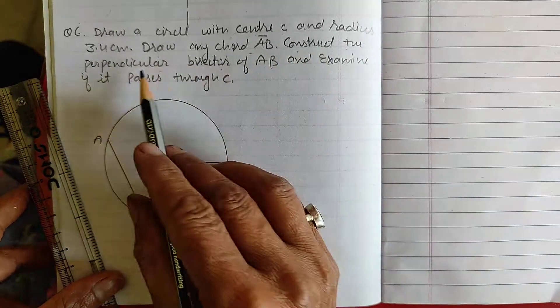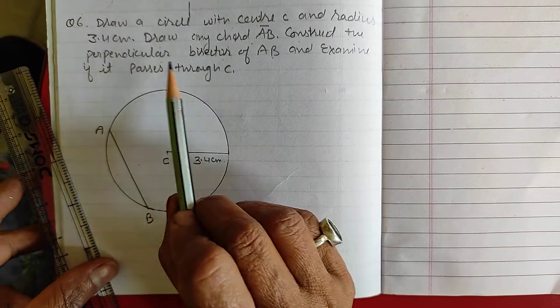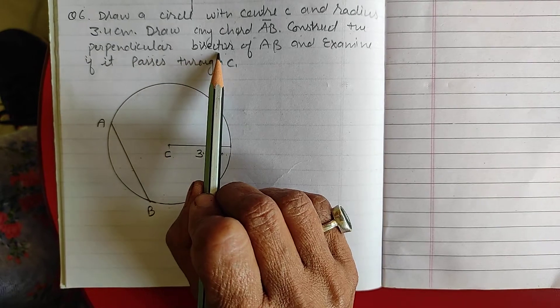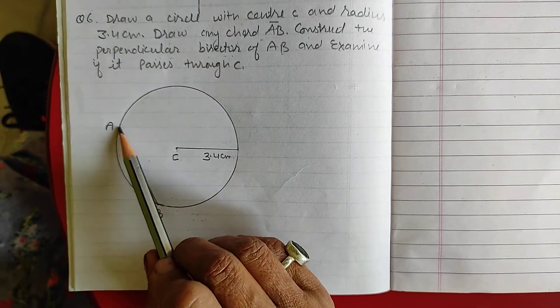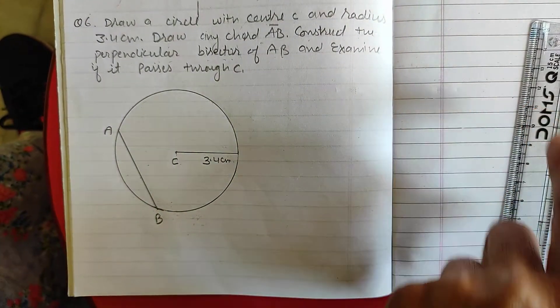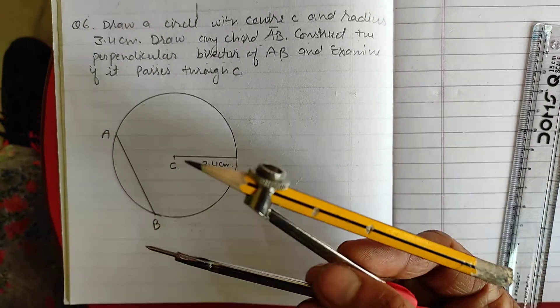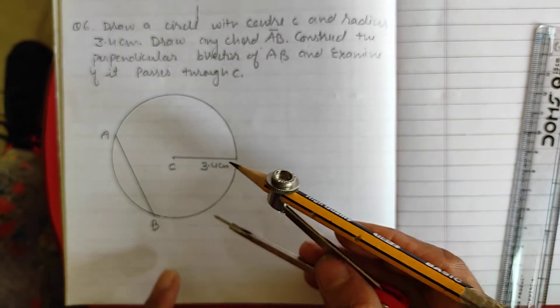Now, you have to draw the perpendicular bisector. Perpendicular means 90 degrees. Bisector means you have to divide it in half. So, you have to bisect AB.